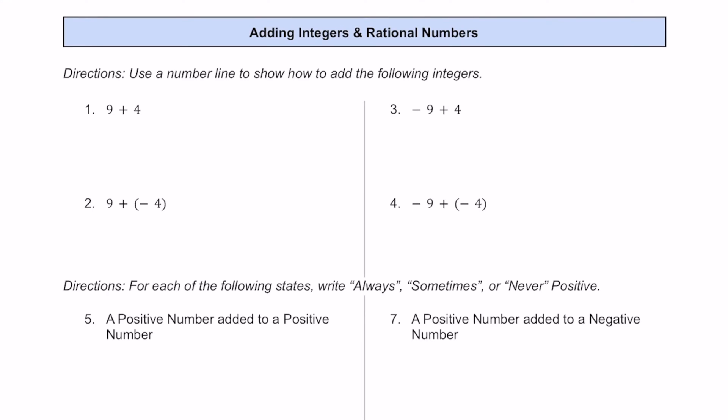Let's practice adding integers and rational numbers together. For problems 1 through 4, we're going to use a number line to show how we can add each of the following integers together.